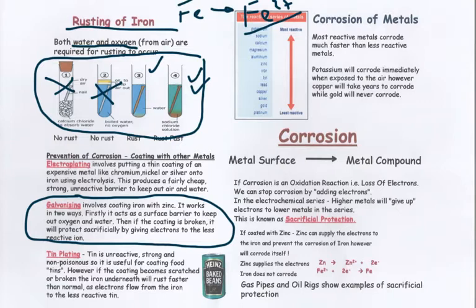Other methods of giving a barrier are electroplating and tin plating. Another method, as mentioned with galvanising, is sacrificial protection.